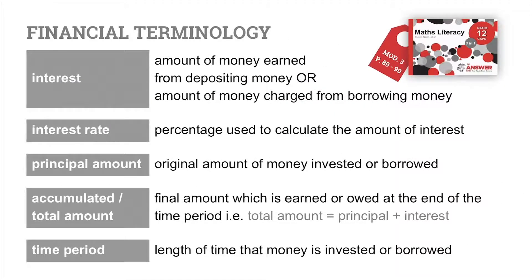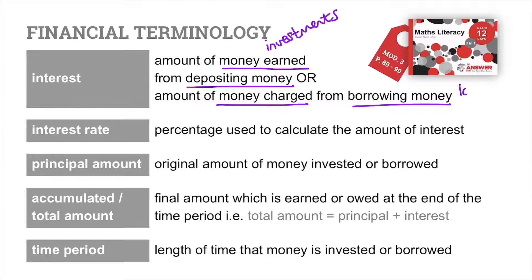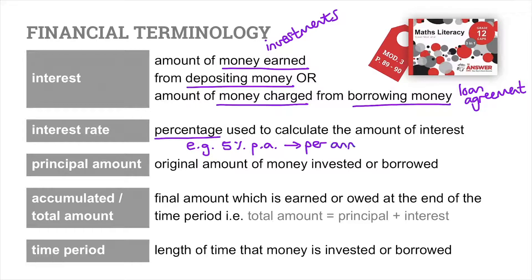Financial terminology: Interest is the amount of money earned from depositing money — this applies to investments, savings accounts, RAs, and fixed deposits. Interest is also the amount charged from borrowing money, for any kind of loan agreement. The interest rate is the percentage used to calculate the amount of interest, written for example as 5% p.a. — p.a. stands for per annum, meaning per year.